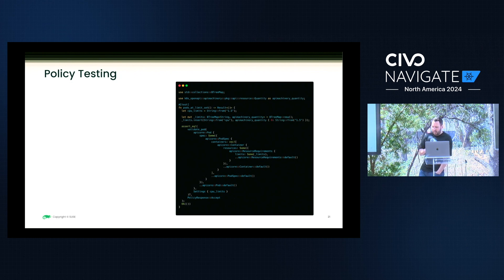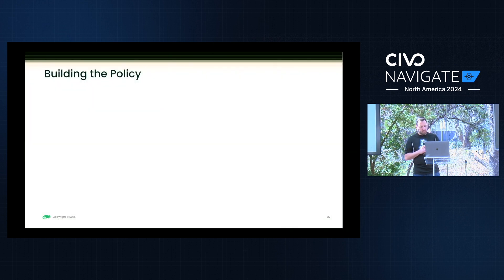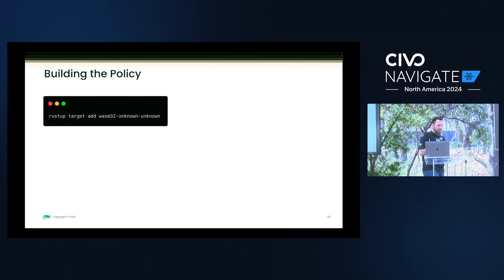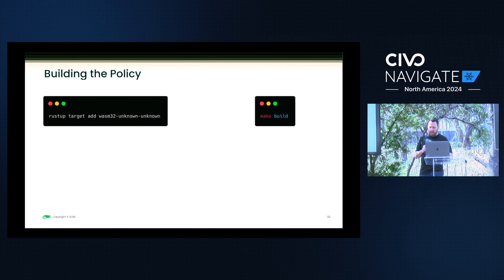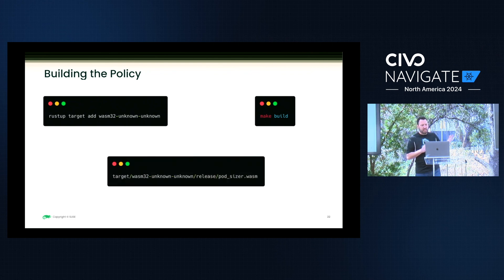To test the policy, we build out the spec with the API core framework and then traverse down to test what it looks like. To build it, run rustup target add wasm32 — you need to do this because Rust doesn't know the target build. There's a Makefile in the scaffolding from cargo generate that builds everything, and you'll get a release directory with a WASM file — we call it pods-underscore-sizer.